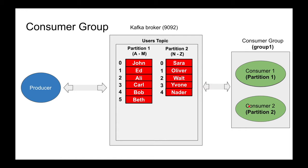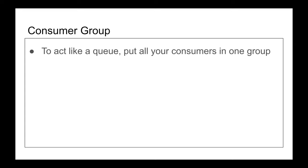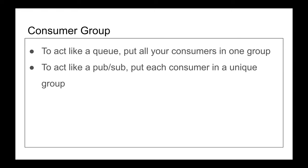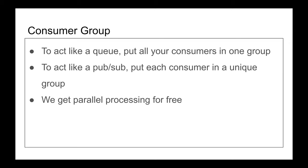If you want to act like a queue, put all your consumers in one group. If you want to act like a PubSub system where the message is broadcast to every consumer, simply put each consumer into its own unique group. A partition can be consumed by multiple consumers in different groups. And as a result, you get parallel processing for free — multiple consumers in one group can read from multiple partitions in parallel.